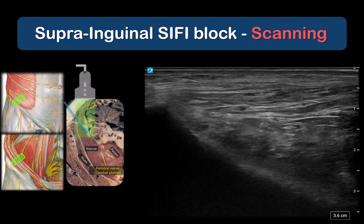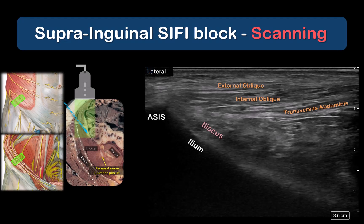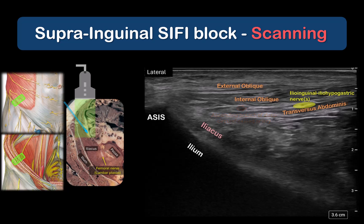The patient in this example is an older individual with relatively thin muscle layers, typical of many hip fracture patients. Careful survey scanning identifies the ascending branch of the deep circumflex artery and the ilioinguinal and iliohypogastric nerves in their expected location between internal oblique and transversus abdominis.